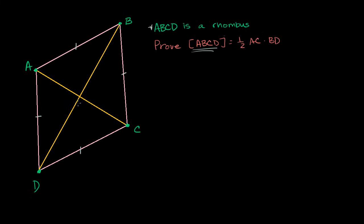Because it's a parallelogram, we know that diagonals bisect each other. Let's call this intersection point E. We know that BE is going to be equal to ED, and we also know that AE is equal to EC. We also know, because this is a rhombus — and we proved this in the last video — that the diagonals not only bisect each other, but they are also perpendicular. So we know that all four angles here are right angles.